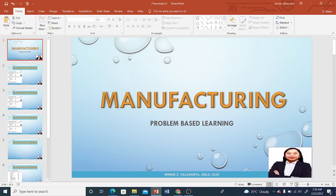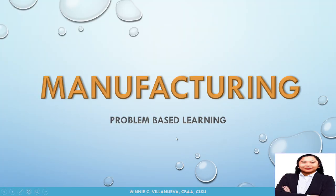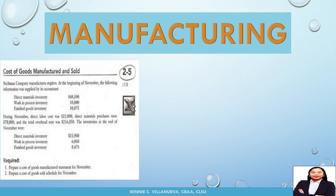Hello students. We are going to have a sample problem for you to have an in-depth learning on manufacturing. We are going to start with the preparation of the cost of goods manufactured and sold. If you are given a problem, the first thing you have to do is know what is being required. In this case, what is being required is the cost of goods manufactured.